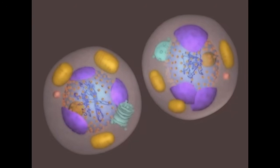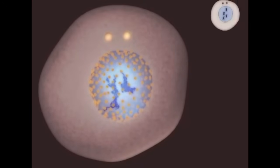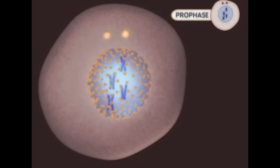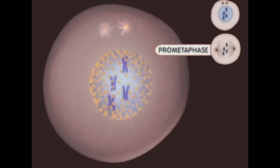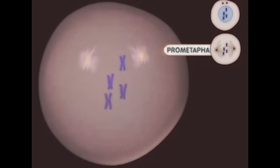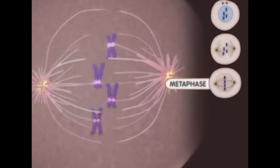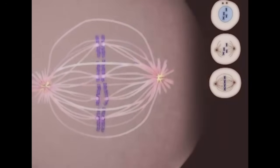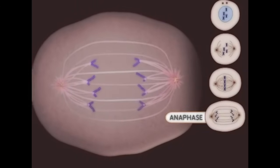Let's watch the process one more time. Mitosis begins with prophase — notice the DNA condensing into chromosomes during this stage. Microtubules appear during prometaphase, and the nuclear membrane breaks down. Metaphase occurs when the chromosomes are aligned at the center of the cell. During anaphase, the chromosomes are moving apart.